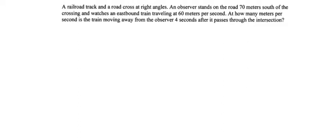All right, let's continue with our examples of related rates. Here we have a problem: a railroad track and a road cross at right angles. An observer stands on the road 70 meters south of the crossing and watches an eastbound train traveling at 60 meters per second. So let's just sketch up a little bit of what this picture looks like.